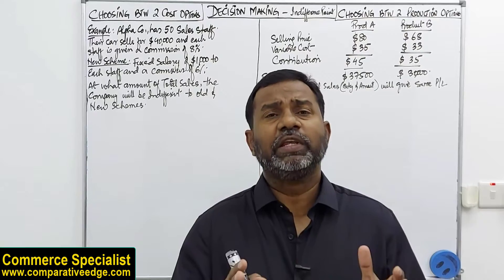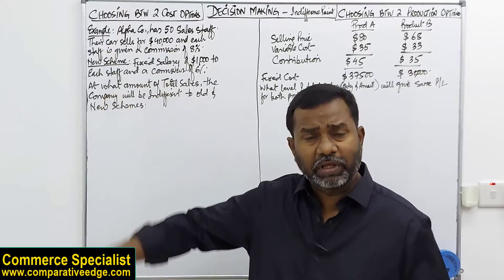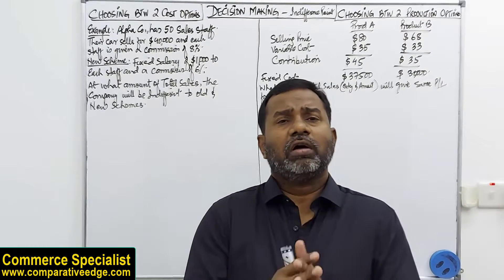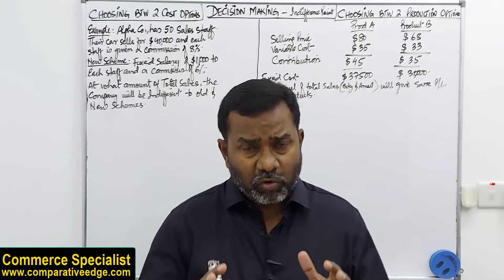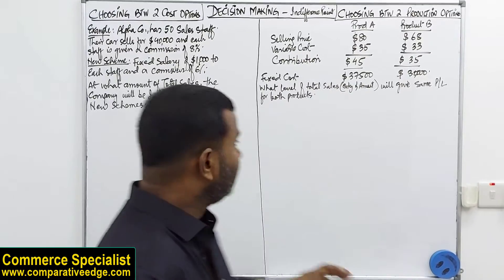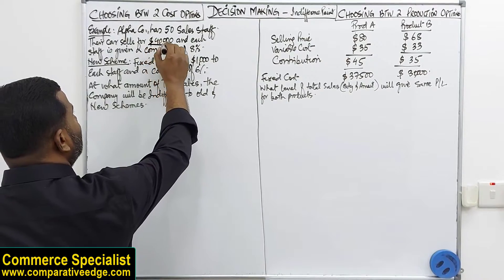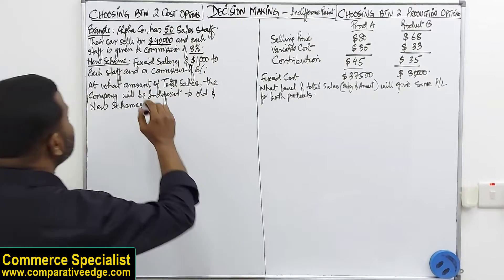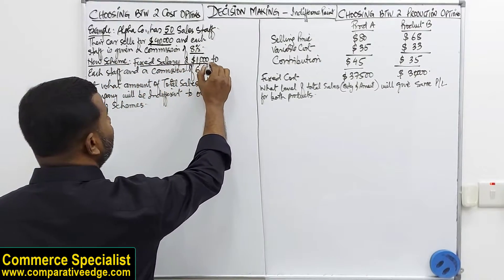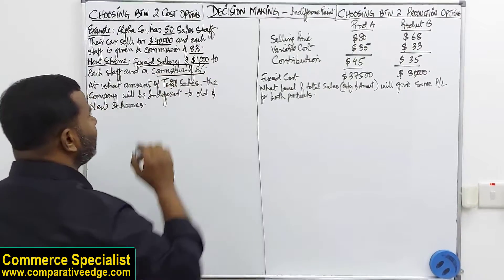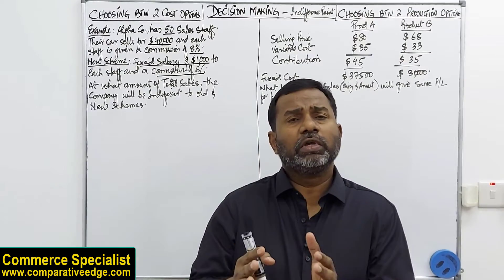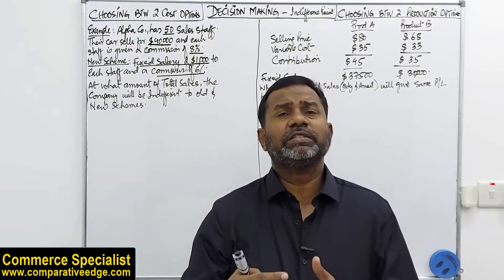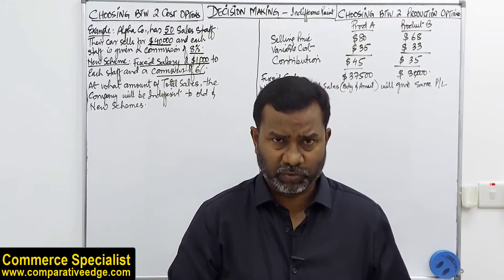I'm explaining both decision making areas with two different numerical examples. In the first one, there is a company with 50 employees — a car selling company — where each car is sold for 40,000 US dollars. At the moment they pay 8% commission on sales. The company is considering a new scheme where every sales person gets a fixed salary of 1,000 plus a commission of 6% on sales.